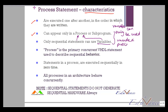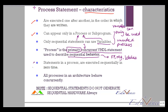A process is a primary VHDL statement. It is concurrent — remember, all processes behave concurrently. Its primary job is to describe sequential behavior, such as when you have sequential logic like flip-flops, registers, and latches. Statements in a process are executed sequentially, and all processes in an architecture behave concurrently. If there are processes A, B, and C, each of them will execute concurrently.